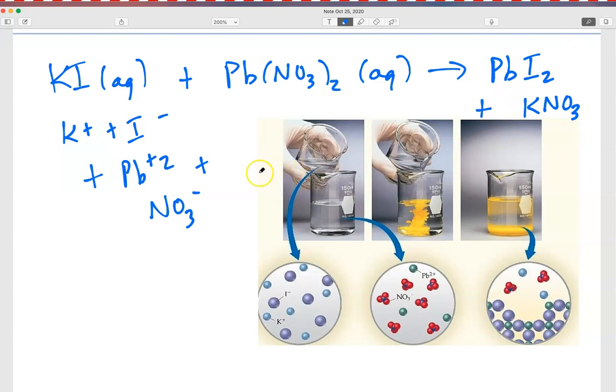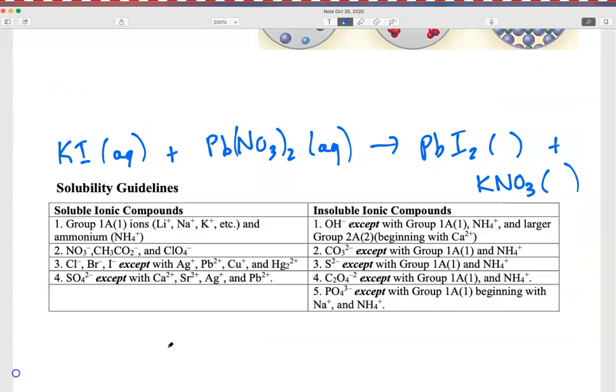So potential products that could be forming are the lead iodide and the potassium nitrate. One of those must be a solid. Well, how do I know which one is a solid? And the answer is solubility rules.